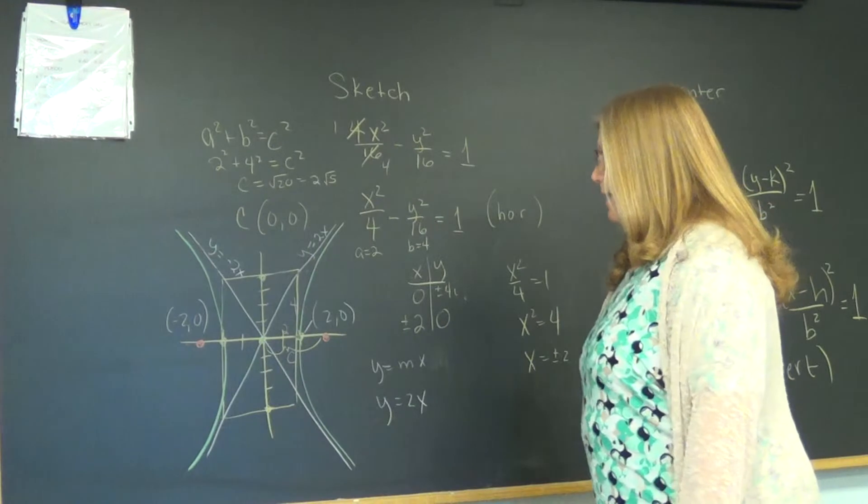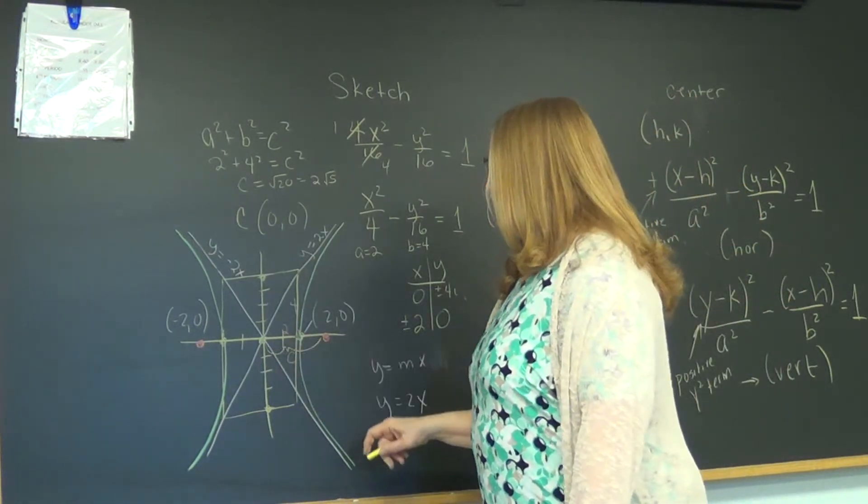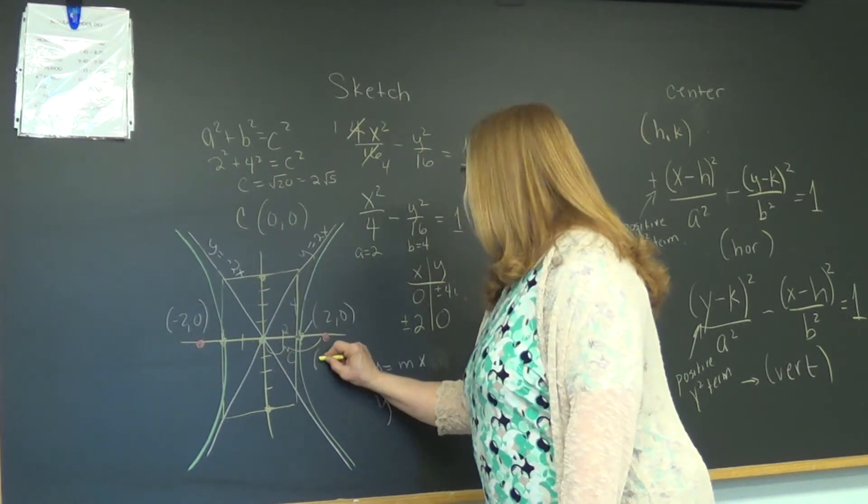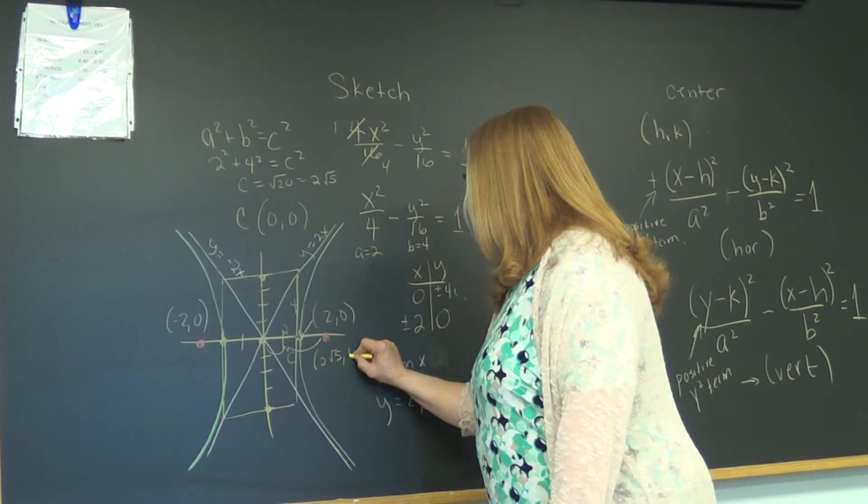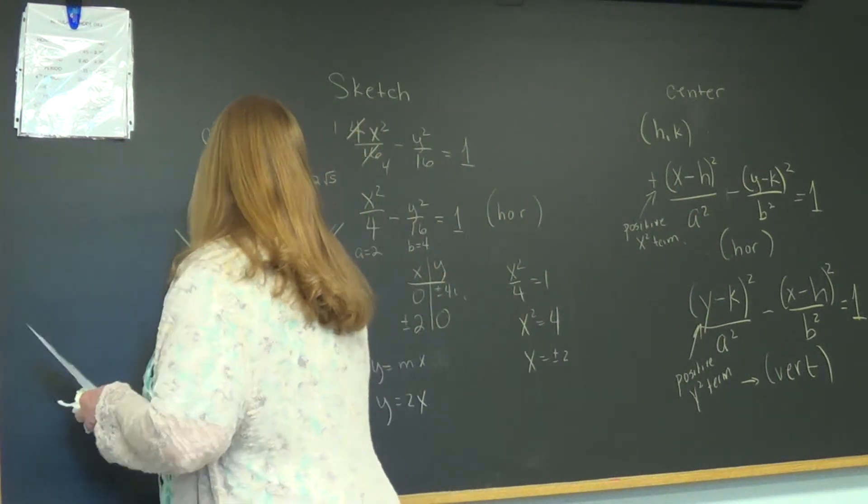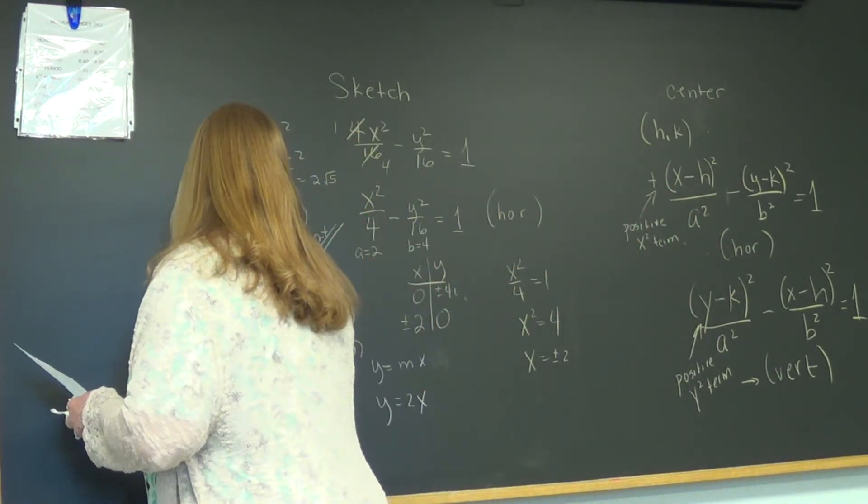And that was really what I need. So the foci are on the x-axis. We're going to go over two square roots of five, zero, and on the other side is going to be negative two square roots of five, zero.